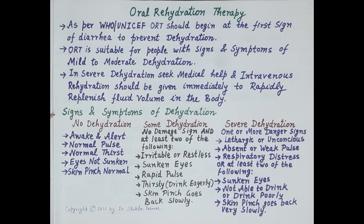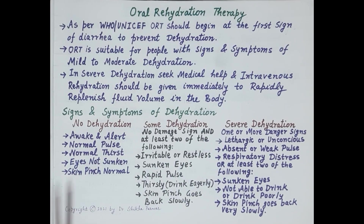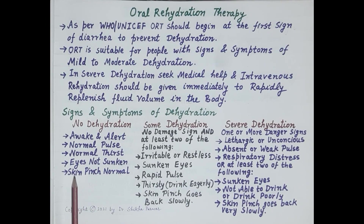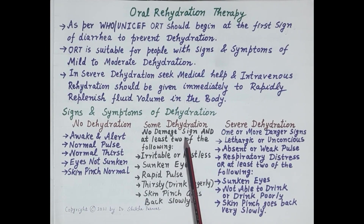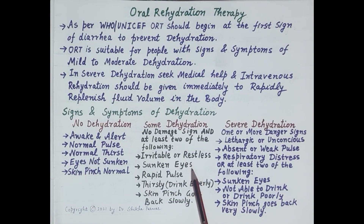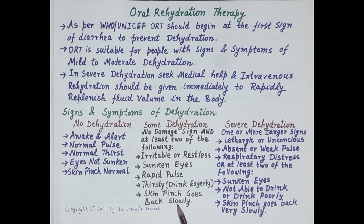Signs and symptoms of dehydration: With no dehydration, the person remains awake and alert, pulse is normal, thirst is normal, eyes are not sunken, and skin pinch is normal — meaning lightly pinching the skin on the arm shows it quickly bounces back. With some dehydration, there are no danger signs, but at least two of the following are visible: the person is irritable or restless, eyes are sunken, pulse is rapid, the person is thirsty and drinks eagerly, and skin pinch goes back slowly — taking longer than usual to bounce back.